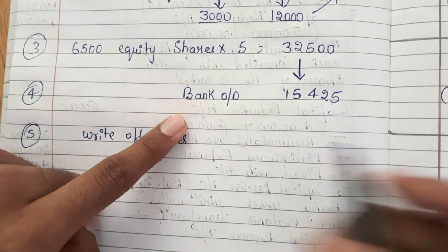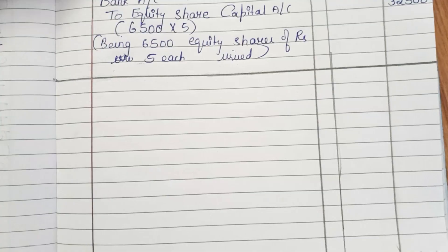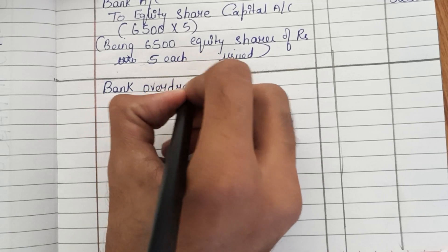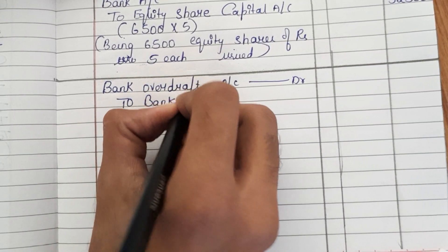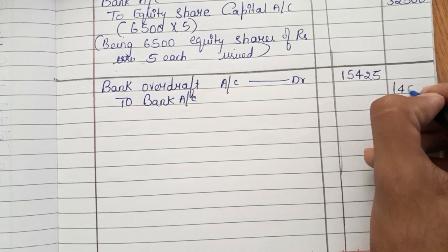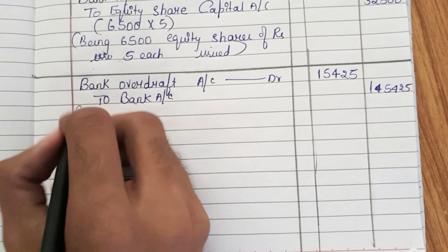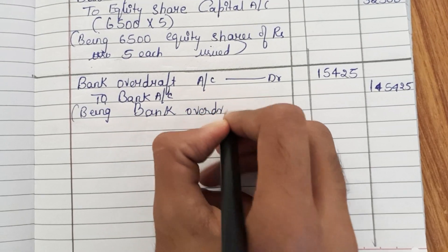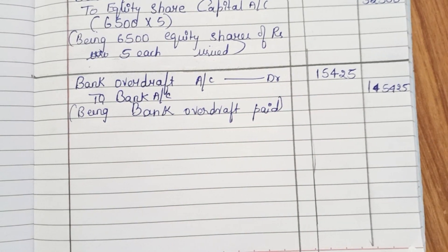Fourth journal entry — we are paying off the bank overdraft. Bank overdraft account is debited, and bank account is credited for Rs.15,425. Narration: being bank overdraft paid. This is the fourth journal entry.